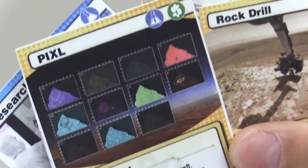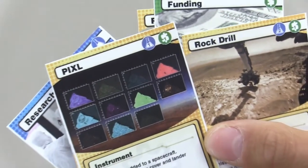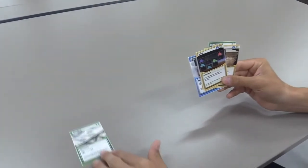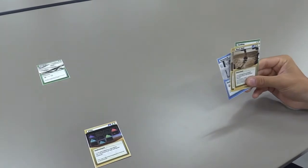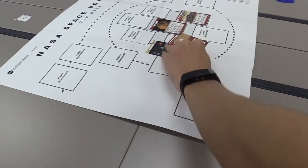Purchase an instrument. You must have the resources identified in the top right of the card to purchase an instrument. Instruments can be purchased at any time, but they must be added to the spacecraft to accumulate research points.